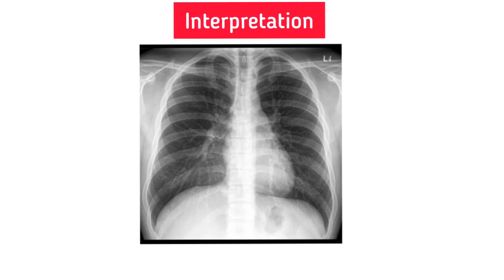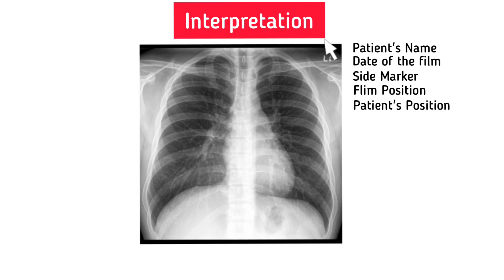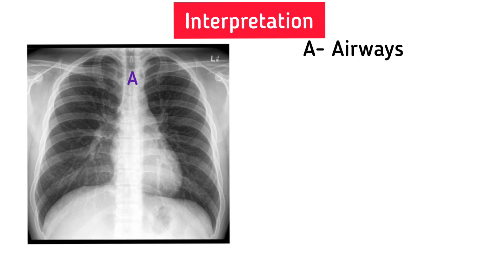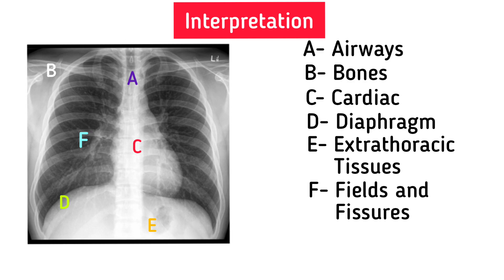The interpretation of chest x-ray should be approached systematically. For chest x-ray, there is a classic schematic: A, B, C, D, E, and F. You should first check the patient's name, date of film, side marker, film position, and patient's position such as erect, anterior-posterior, or posterior-anterior. The analysis is: A for airways, B for bones, C for cardiac, D for diaphragm, E for extra-thoracic tissues, F for fields and fissures.